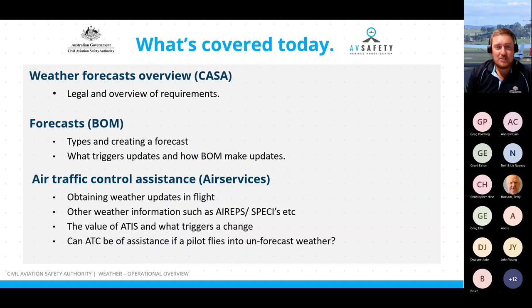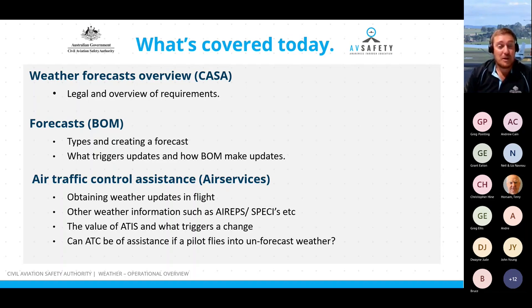What we're going to cover today in Part One is a general overview and reminder of our legal requirements for obtaining weather forecasts and where to obtain them. I'll then hand over to Michael Paik who will run us through the types of aviation forecasts the BOM issue, including sources they use in creating forecasts and what triggers an update. Finally, Christopher Hein from Air Traffic Control will talk about how pilots can use ATC assistance in obtaining weather updates during flight.